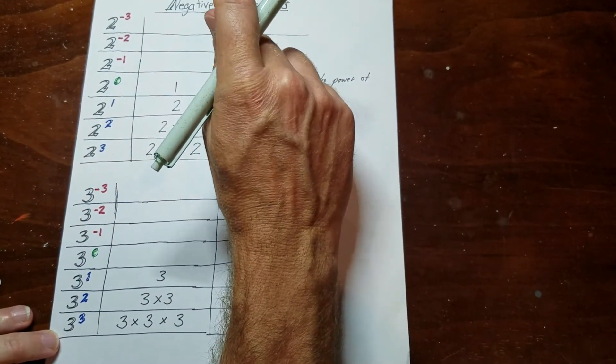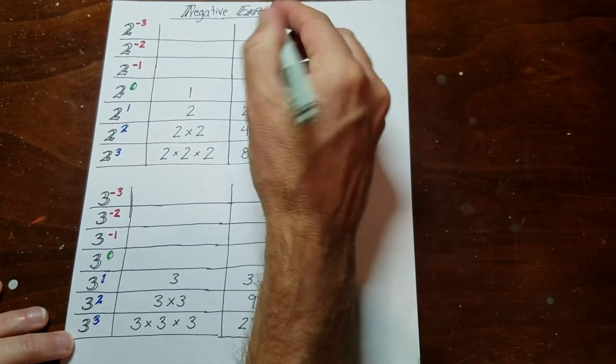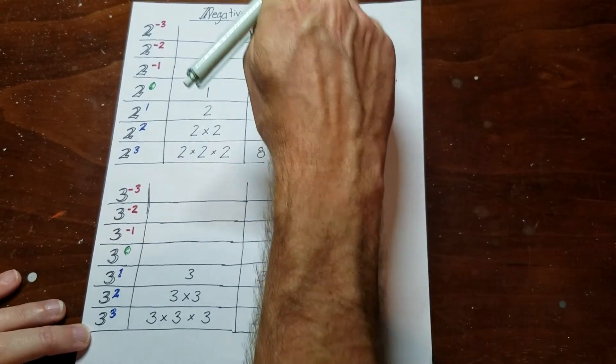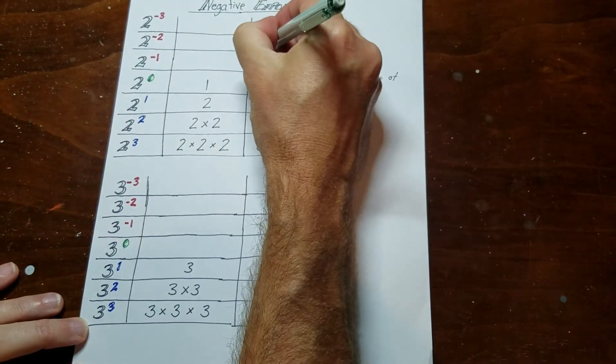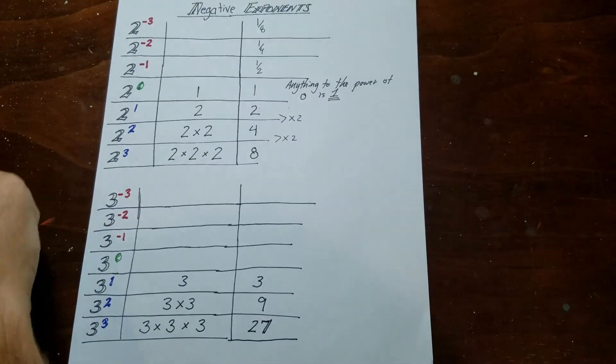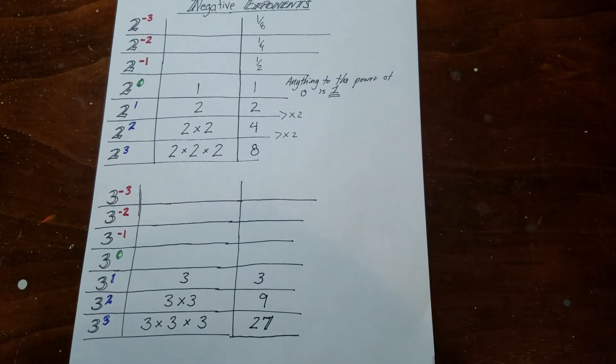If I take 1 and I divide it by 2, I'm going to get 1 over 2. And if I divide that by 2, I'm going to get 1 over 4. And if I divide that by 2, I'm going to get 1 over 8. And hopefully you can see there's a bit of a pattern here.